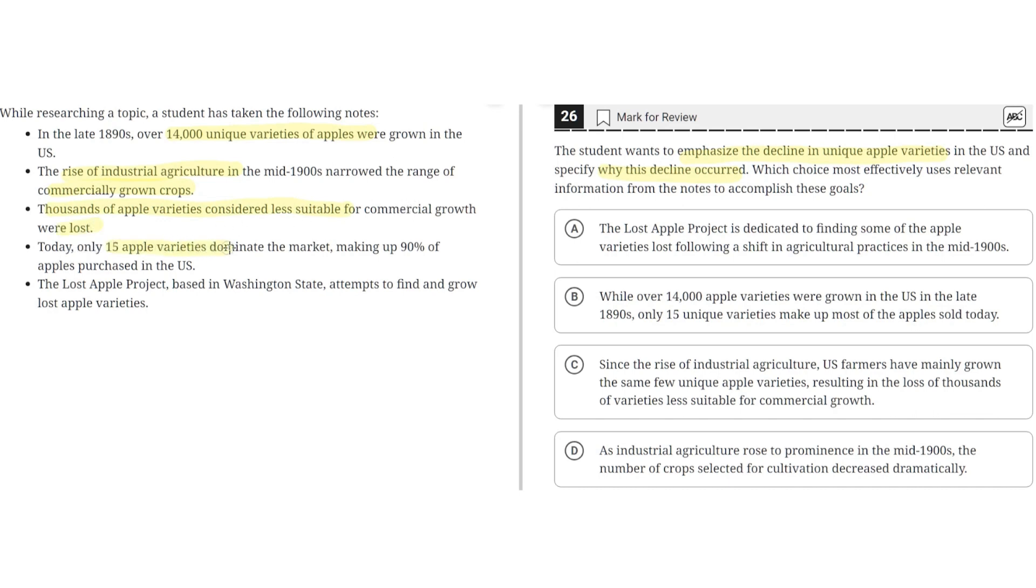Today, only 15 apple varieties dominate the market, making up 90% of apples purchased in the U.S. The Lost Apple Project, based in Washington State, attempts to find and grow lost apple varieties.